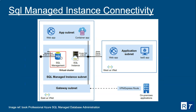Looking at this diagram — here is the virtual network 'East US VNet.' Inside this virtual network, the SQL Managed Instance is deployed in a dedicated subnet. In the center you can see the SQL instance, which has a private Tabular Data Stream endpoint. Communication between applications and the SQL instance happens using the TDS protocol via this private endpoint.